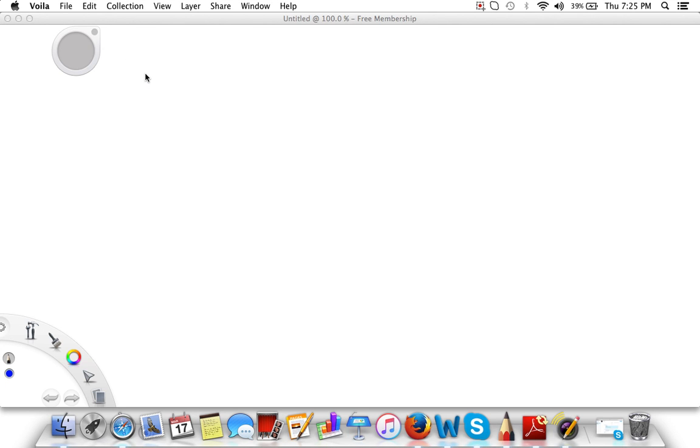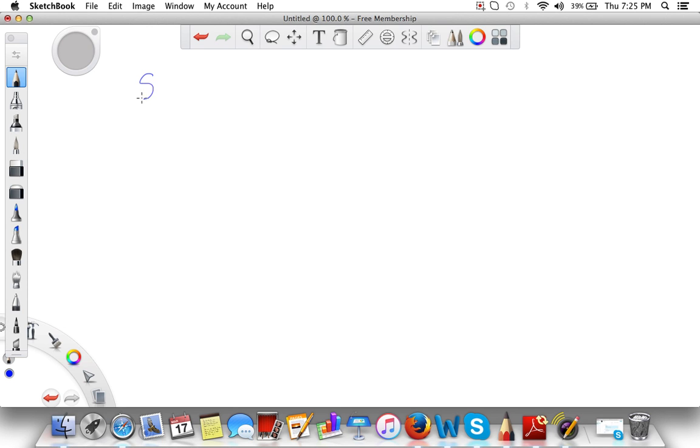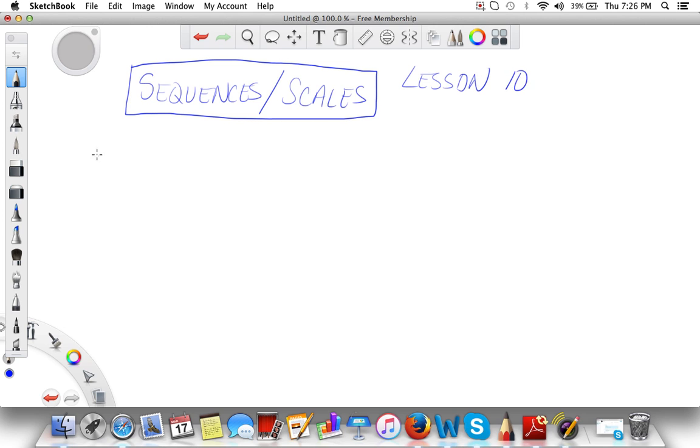Today we're talking about sequences and scales, coming from Lesson 10 on page 43 in the Saxon Math textbook. A sequence is an ordered list of numbers called terms that follows a certain rule. Here are two different sequences.